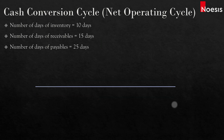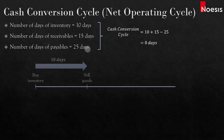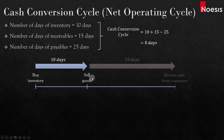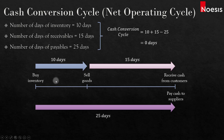In the second example, the number of days of inventory is 10 days, the number of days of receivables is 15 days, and the number of days of payables is 25 days. Using the formula, the cash conversion cycle is 10 plus 15 minus 25, which equals 0. Graphically, it takes 10 days to sell the goods and another 15 days to receive cash from customers, so the operating cycle is 25 days. From the point we buy the inventory to the point we pay the suppliers is also 25 days.